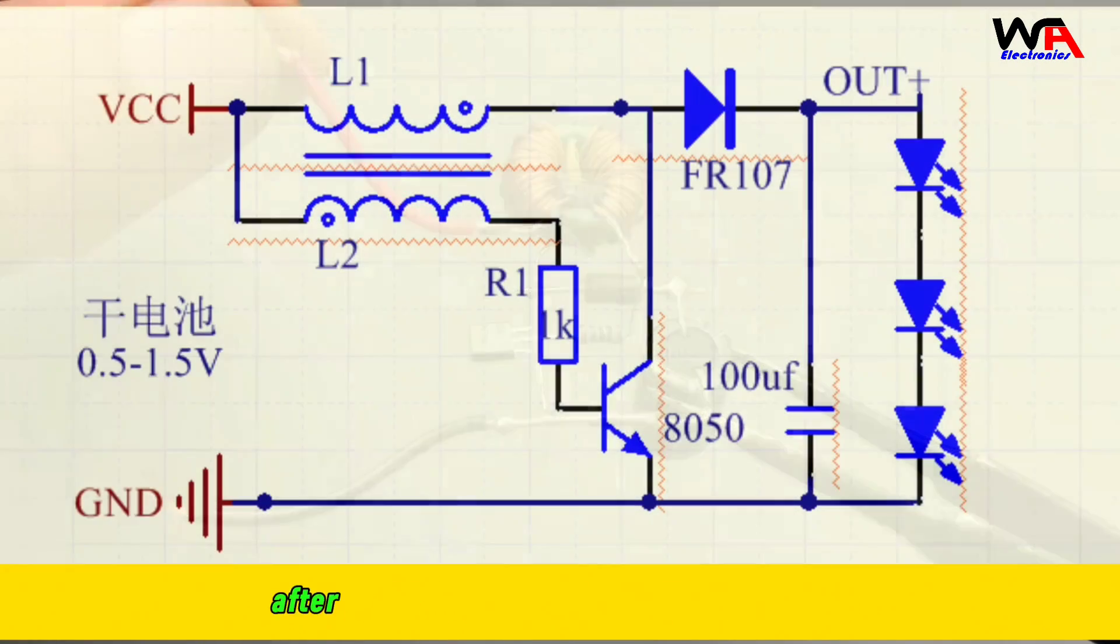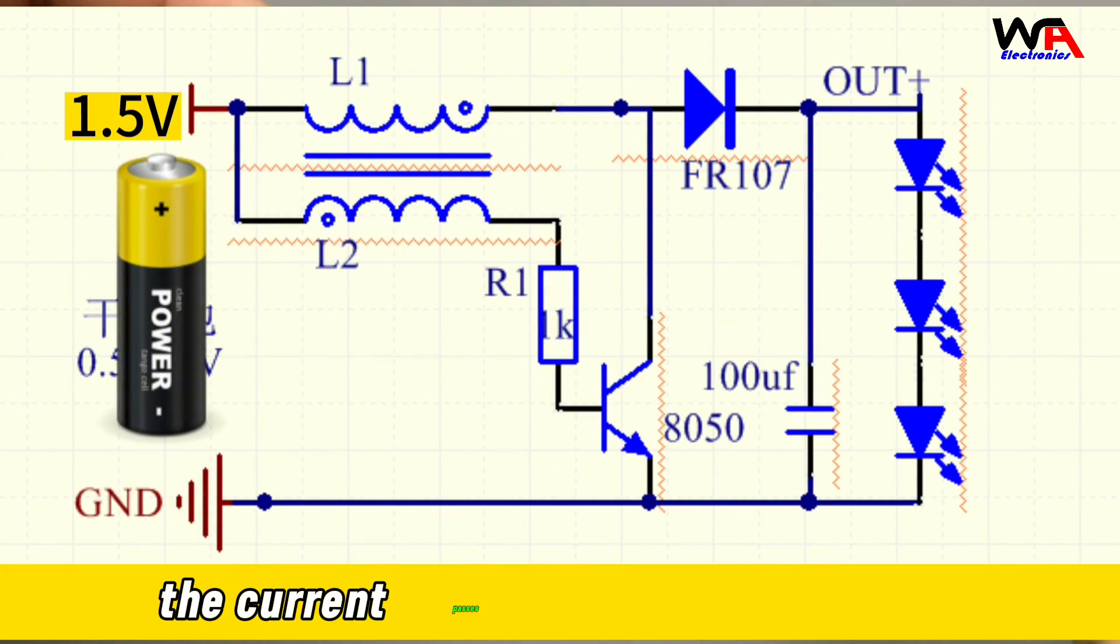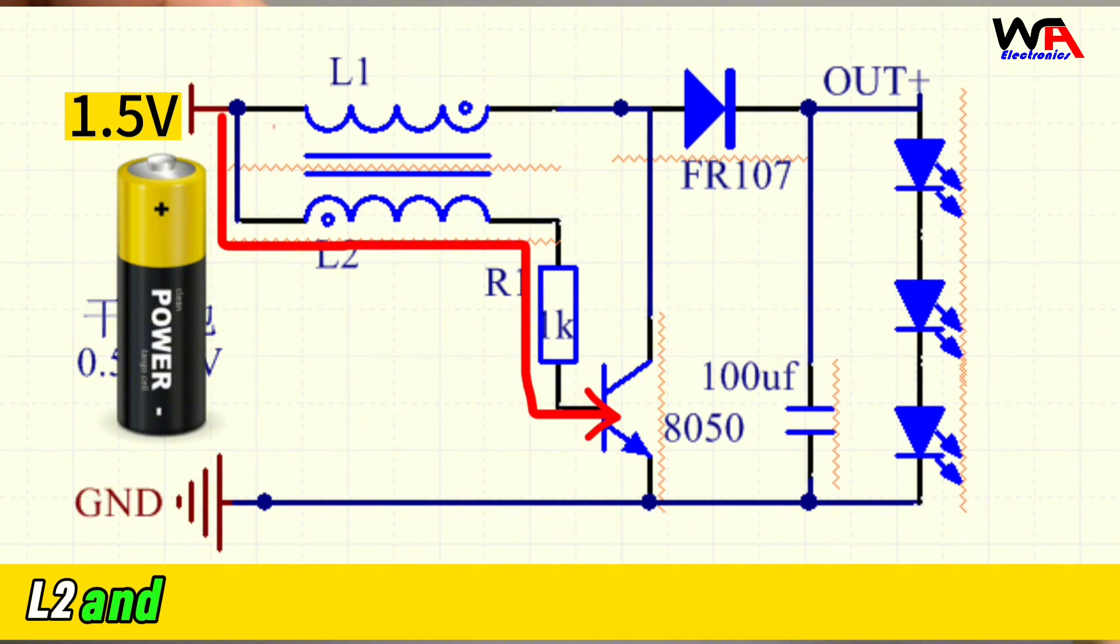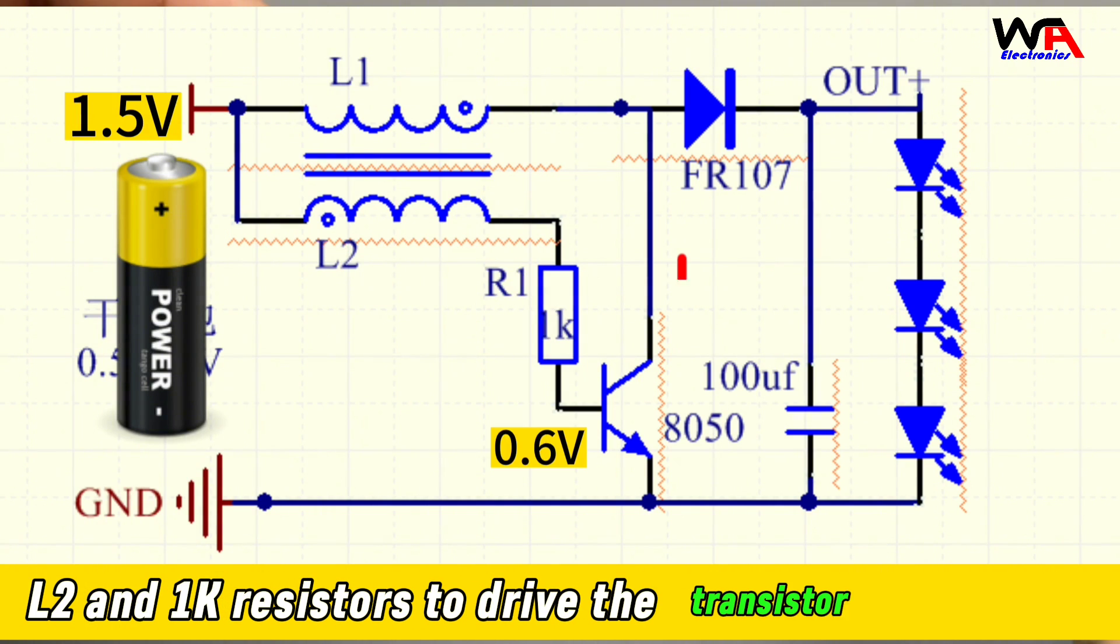Now let's check how it works. After the circuit is powered on, the current passes through inductor L2 and the 1K resistor to drive the transistor to conduct.